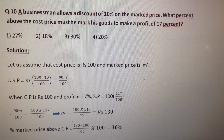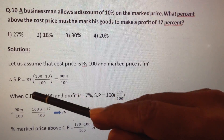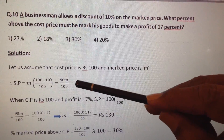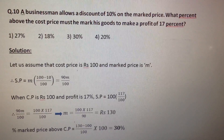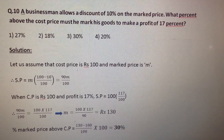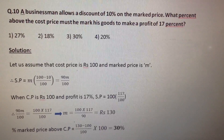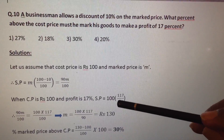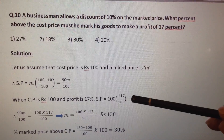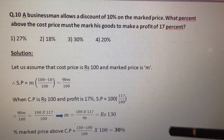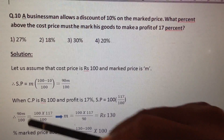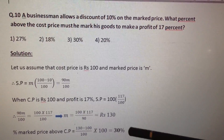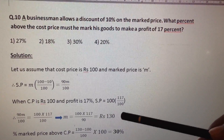When he allows a discount of 10%, his sale price is equal to M into (100 minus 10) by 100, which is equal to 90M by 100. He wants to make a profit of 17% and the cost price is 100 rupees. Therefore, sale price is equal to 100 into 117 by 100. Since both are equal, 90M by 100 equals 100 into 117 by 100. Therefore, M is equal to 100 into 117 by 90, which is equal to 130 rupees.